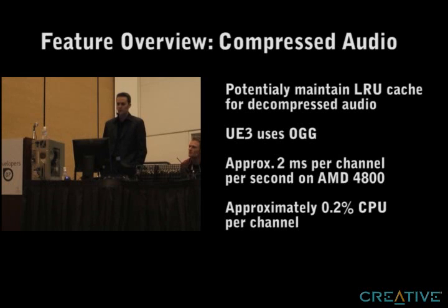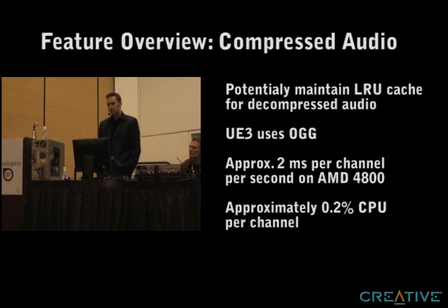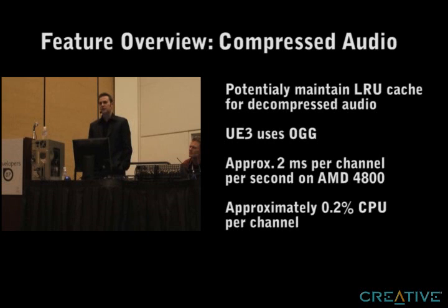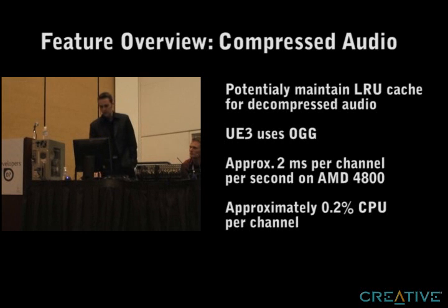AAC decompression takes roughly 2 milliseconds per channel per second. If you have 50 channels, that costs 3.3 milliseconds per frame at 30 Hz. On average this isn't too bad, but the bad cases are spikes when multiple sounds are played in the same frame, which is often the case during firefights. That's why we are looking into the least recently used cache.